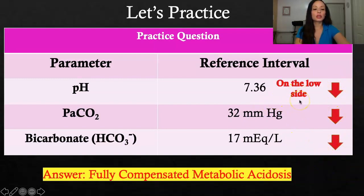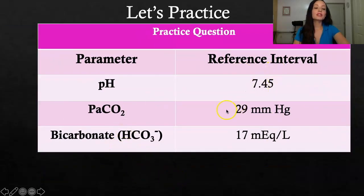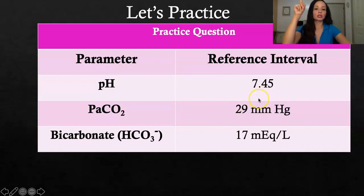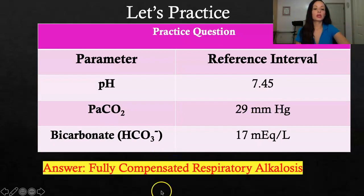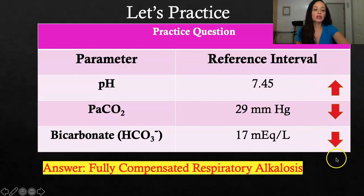Practice question five: pH is 7.45 — on the high side, within normal range. CO2 is 29 — normal CO2 is 35 to 45, so it's low. Bicarb is also low. So it's fully compensated respiratory alkalosis: pH is high, CO2 is low, bicarb is also low. The CO2 arrow is facing in the opposite direction of the pH, which is why it's respiratory.